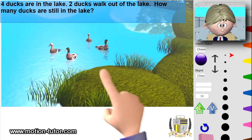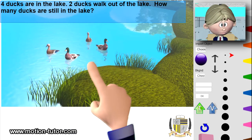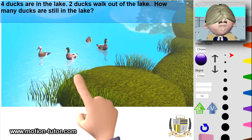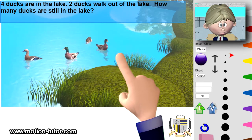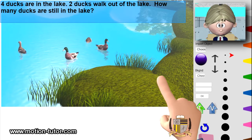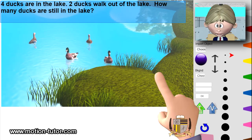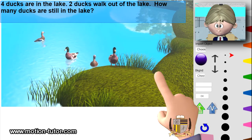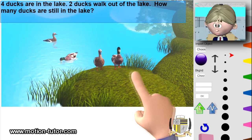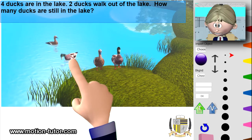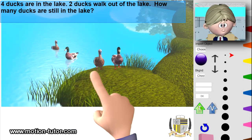Here are the four ducks: one, two, three, four — the four ducks in the lake. And now two ducks walk out: that's one, and that's two. Two ducks walk out of the lake, and we clearly see there are two more still swimming around in the lake.